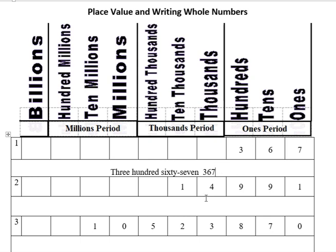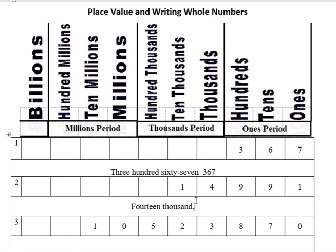The second number is one-four-nine-nine-one. The one is in the ten thousands place and the four is in the thousands place, so the one and the four are in the thousands period, and then nine hundred ninety-one is in the ones period. How I would write that number is fourteen thousand, then nine hundred ninety-one.